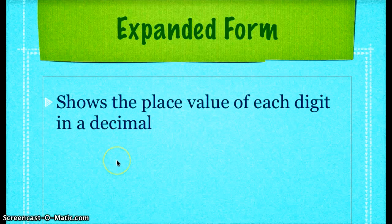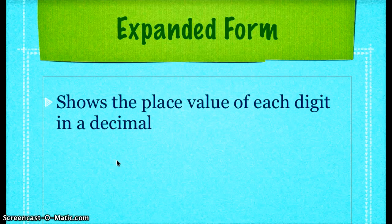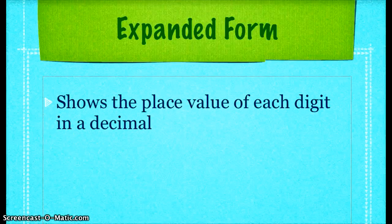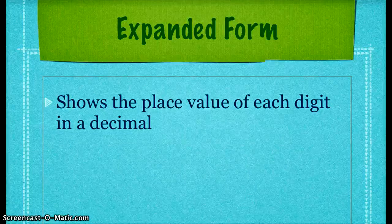Expanded form, on the other hand, shows the place value of each digit in a decimal. In a sense, you're breaking the decimal apart and writing it as one sum. In order to understand expanded form, let's take a look at some examples.